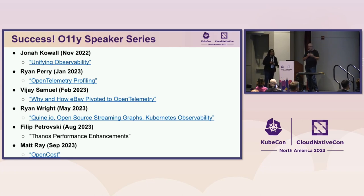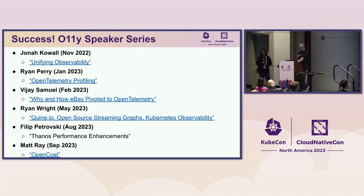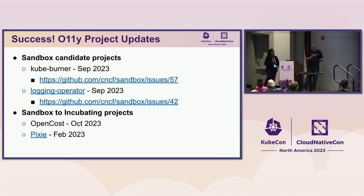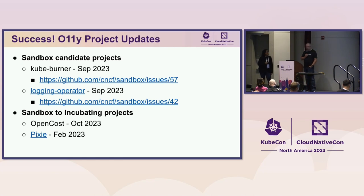We're definitely trying to get more speakers. If you have a project of interest or something interesting you're doing with observability, please feel free to reach out to us on Slack and organize to come present. We'd love some user stories in TAG Observability. We had sessions from Jonah Cowell on observability, Ryan Perry talking about profiling — now part of OpenTelemetry — Vijay talking about eBay pivoting to OTEL, Ryan White on Quine and graphs for observability, Phillip on Thanos performance improvements, and Matt on OpenCost.